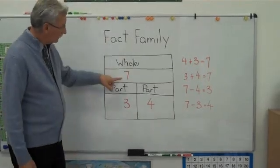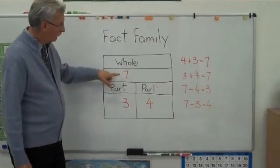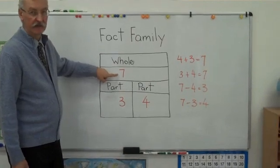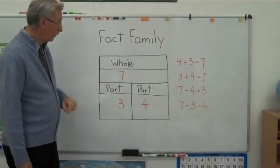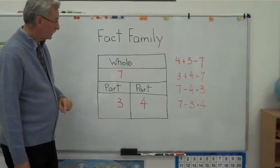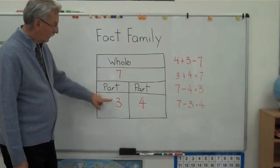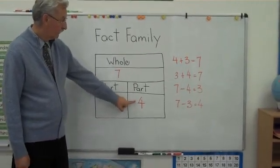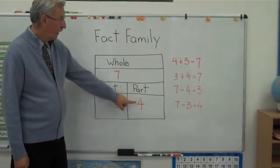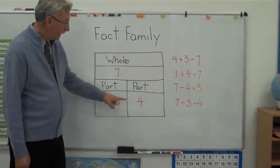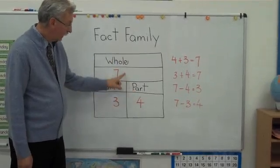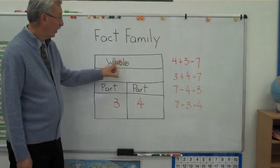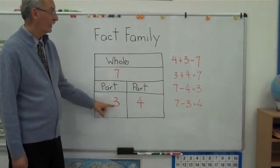In this diagram we're going to be talking about the number 7. We know that 7 can be 3 plus 4. We then say that 7, 3, and 4 belong to a fact family.